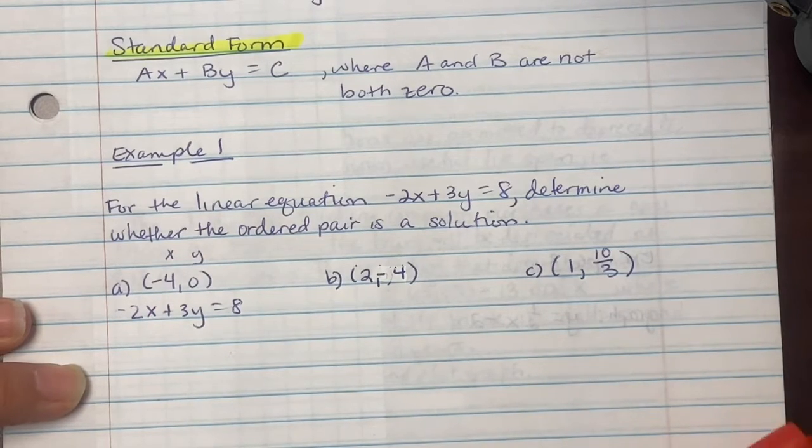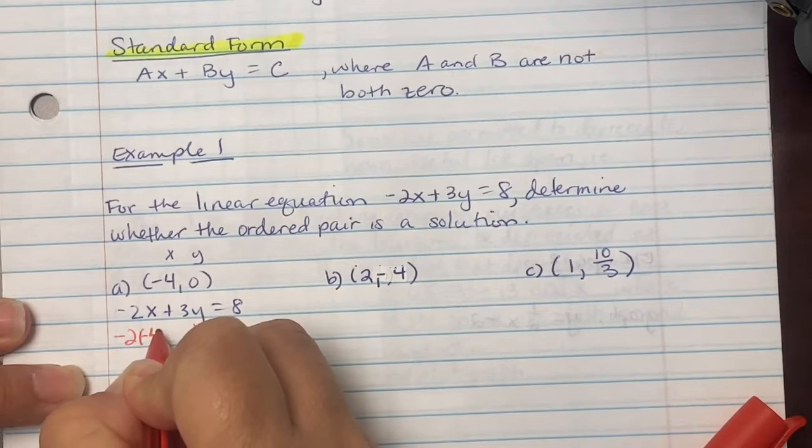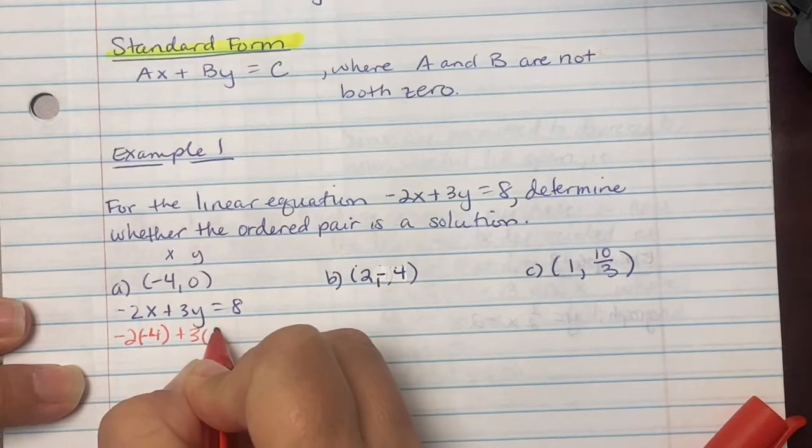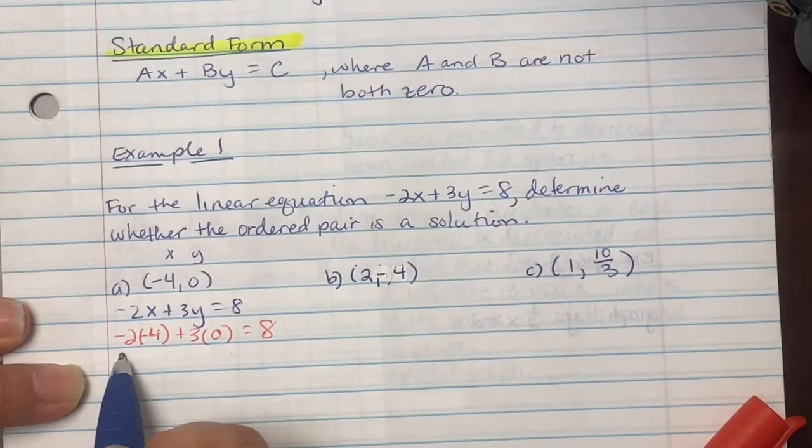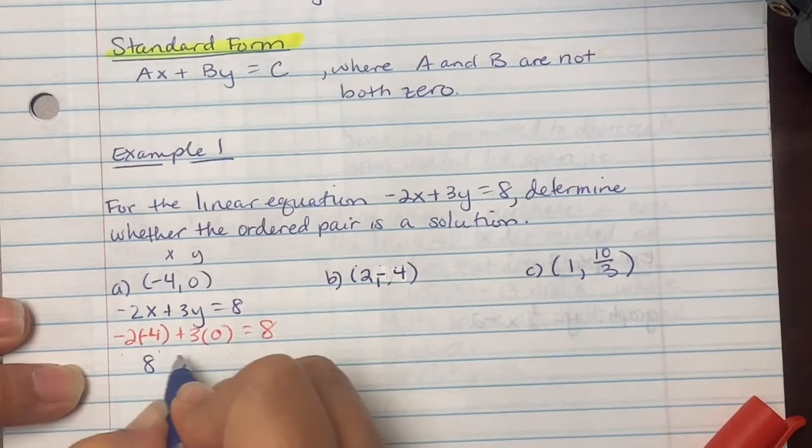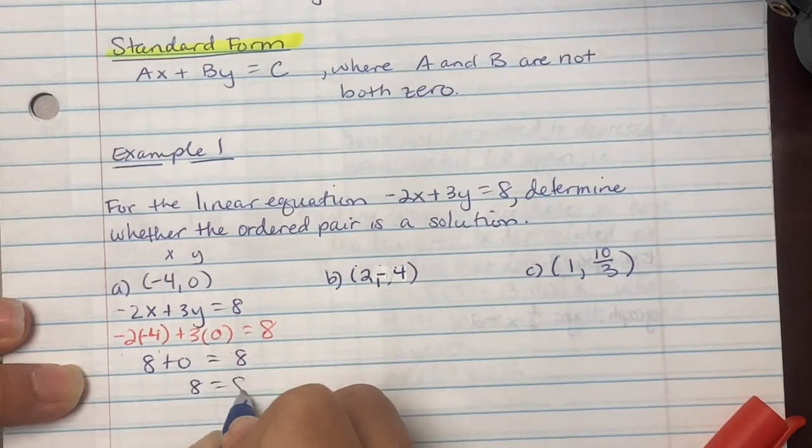So we're going to use substitution and plug in for it. So I'm going to do -2, and in parentheses I'm going to put a -4 plus 3 times 0 equals 8. So -2 and -4 gives us positive 8. This gives us 0, 8, so we get 8 equals 8.